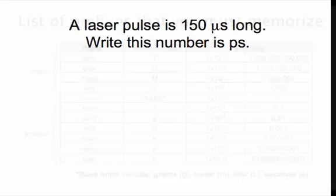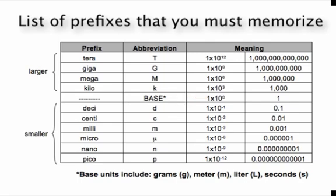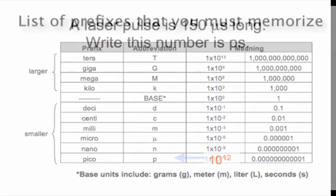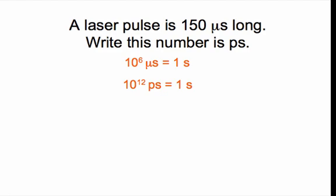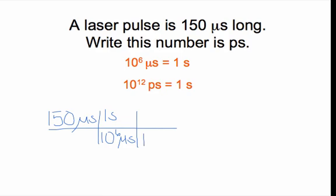Now going from seconds to picoseconds: seconds is larger; you need more picoseconds — 10 to the positive 12 picoseconds equals 1 second. Setting it up: start with 150 microseconds. Put microseconds on the bottom and 1 second on top, with 10 to the 6 on the bottom. Microseconds cancel, leaving seconds. Then put seconds on the bottom and 10 to the positive 12 picoseconds on top. Subtracting powers: 12 minus 6 gives 150 times 10 to the positive 6 picoseconds.